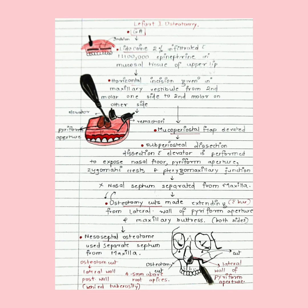A horizontal incision is given in the maxillary vestibule from second molar on one side to the second molar on the other side. Subperiosteal dissection is then carried out and the flap is elevated to expose the nasal floor, pyriform aperture, lateral wall of maxilla, zygomatic buttress, and pterygomaxillary junction.